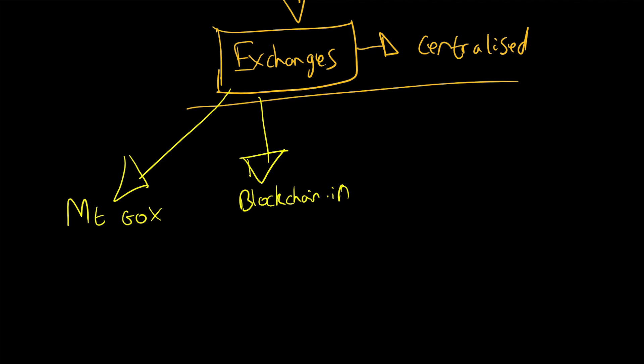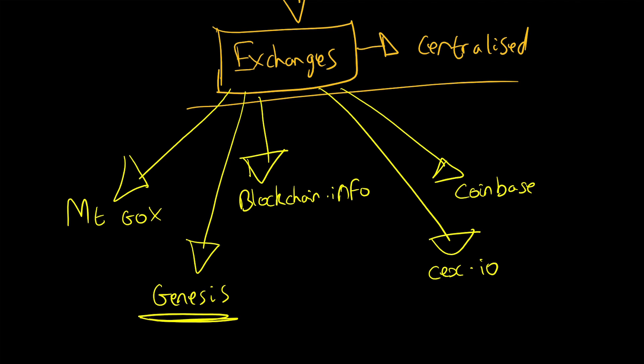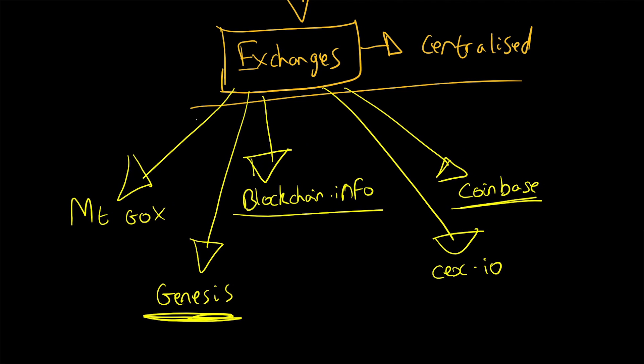There are several exchanges. There's blockchain.info, which allows ethereum transactions on top of Bitcoin as well. There's Coinbase, which at the moment is one of the most widely spread. There's CEX.IO, which is fantastic. There is Genesis. Genesis is mainly for bigger transactions.